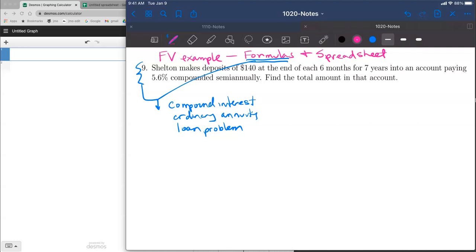What we have is a person making deposits of $140 at the end of each six months for seven years into an account paying 5.6% compounded semiannually. Because we're making regular deposits, this is a special type of account called an annuity. We're looking for the amount in that account after seven years, which is in the future. So we're doing a future value problem, which is also an ordinary annuity problem.